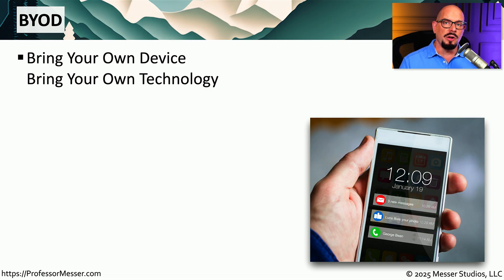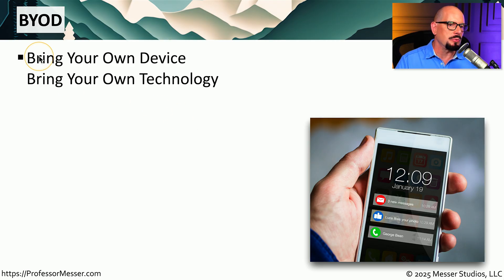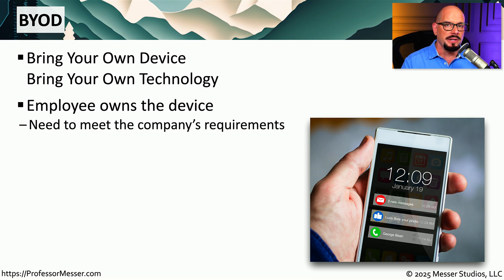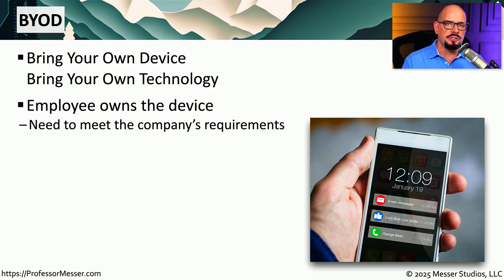Many of us own our own mobile phone, but we also use that same phone when we're at work. We refer to this as bring your own device, or bring your own technology. The employee brings their phone, but also includes company data and company applications on that same phone. This brings up some interesting security concerns because we want to be sure that the phone provides the proper security, especially if company data exists on that device.